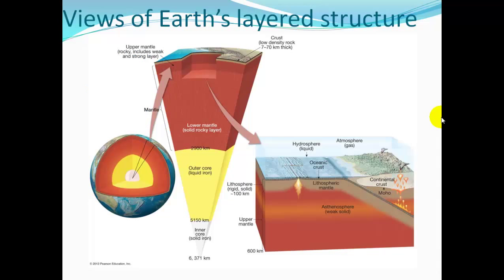The inner core is a sphere with a radius of 754 miles and acts like a solid. We have the inner solid core, then the outer liquid core, then the lower mantle solid rocky layer, then the weaker upper mantle, and finally the crust at the surface.